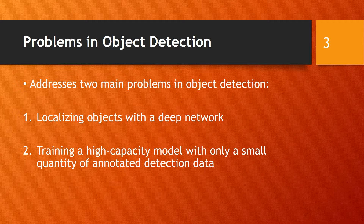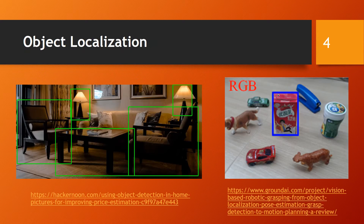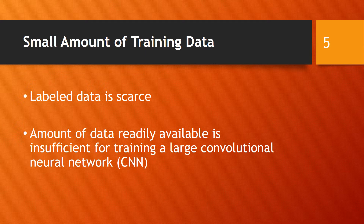The paper addresses two problems in object detection. The first is to localize objects using a deep network. The second is to train a high-capacity model using scarce label data. The problem of object localization involves localizing an object or multiple objects within a given image, like multiple pieces of furniture. The second problem of scarce label data means that there is insufficient data for training a large CNN.